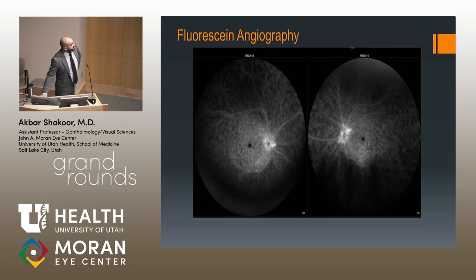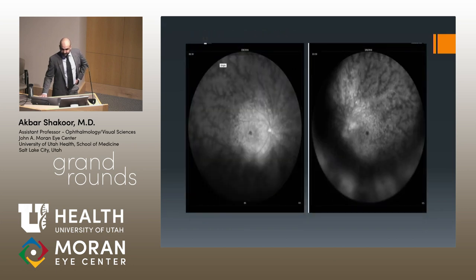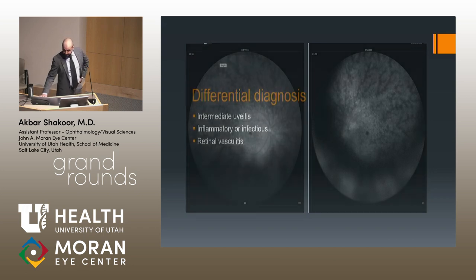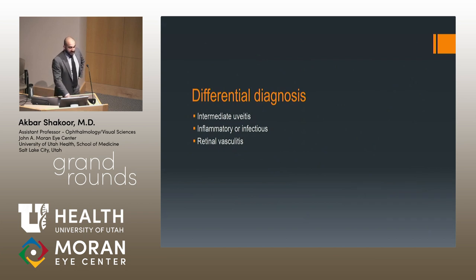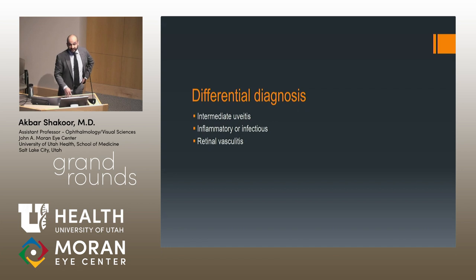When you look at the angiogram, there's diffuse leakage from the arterioles, venules, and capillaries with a lot of leakage from the nerve as well, as seen in the late stage with darkening of the watershed areas. This is what we call a fernlike appearance and leakage, first described by Janet Davis. This is an intermediate uveitis — it's important to rule out inflammatory versus infectious causes. There's also a very strong component of retinal vasculitis, though the intermediate uveitis appears to be the primary problem.